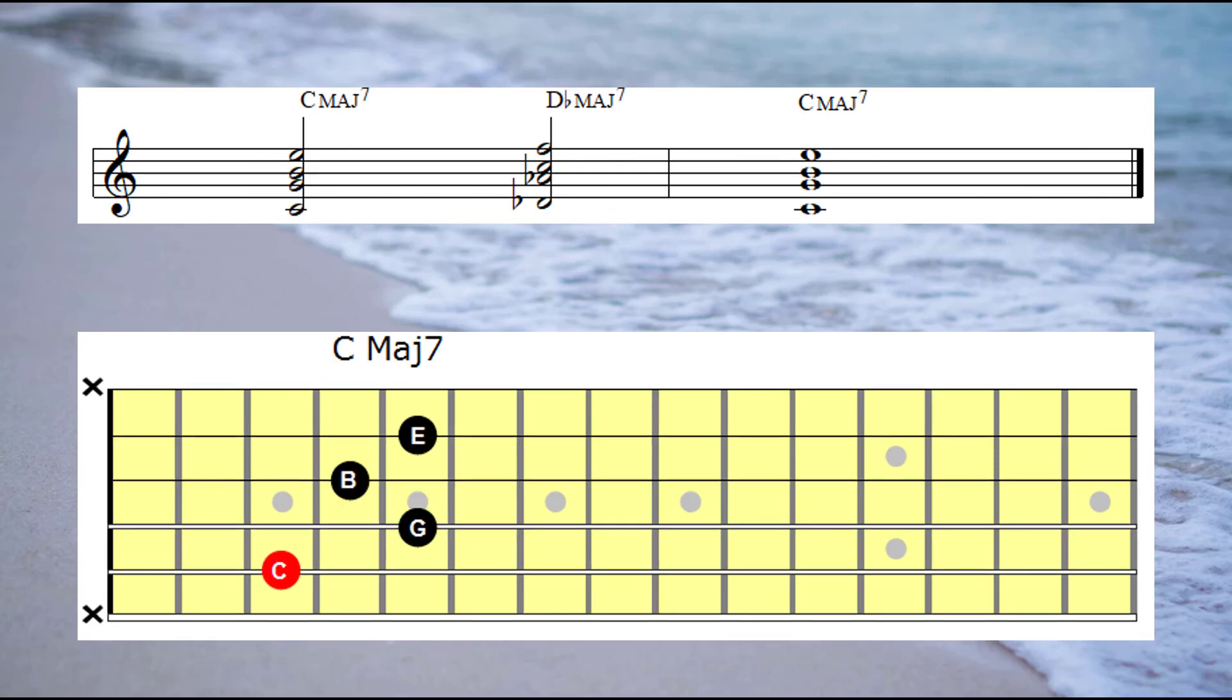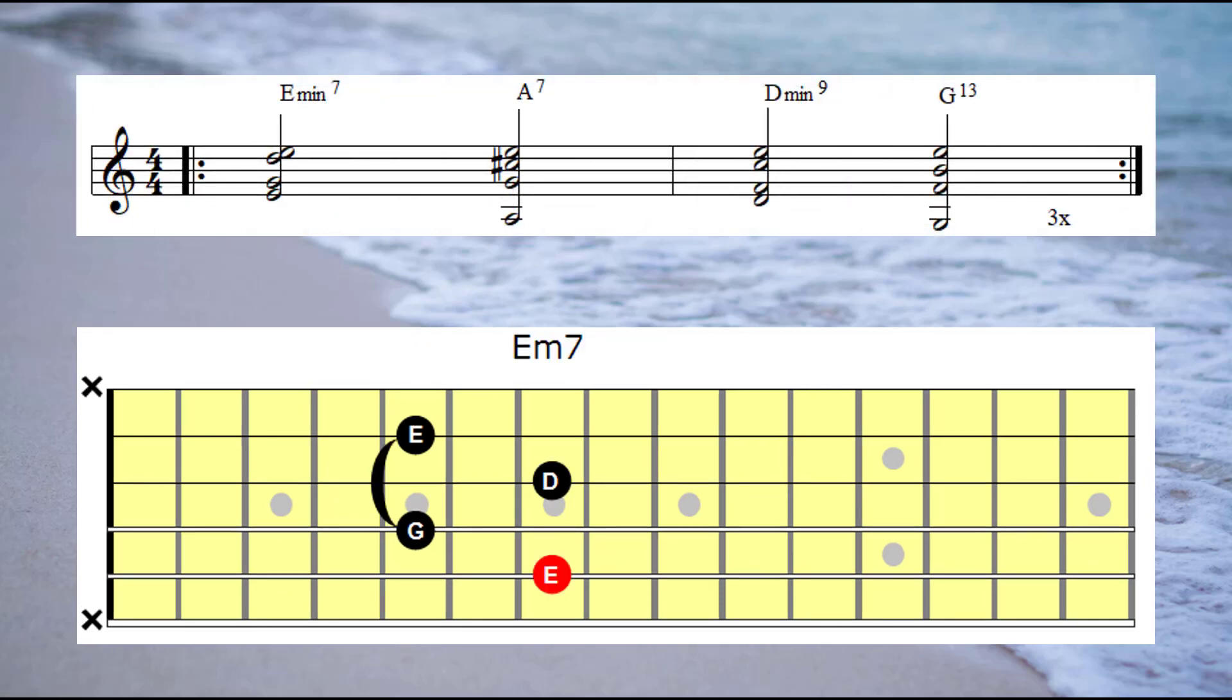Let's have a listen to each chord. We're going to use E minor 7 as a substitute for C major 7. Let's have a listen to how that would sound again using our constant E melody note.